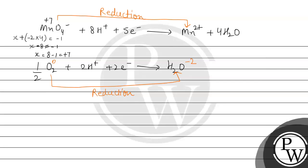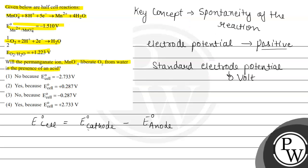And jo humare paas inner cell ki values given hai, let us see in the question. So humane yahaan pe given hai. For this we can see MnO4 positive se MnO4 negative ka value given hai, which means oxidation potential given hai. So we will convert this into E naught MnO4 negative to Mn2 positive. So jo oxidation potential hai, that is equal to the negative of the reduction potential.